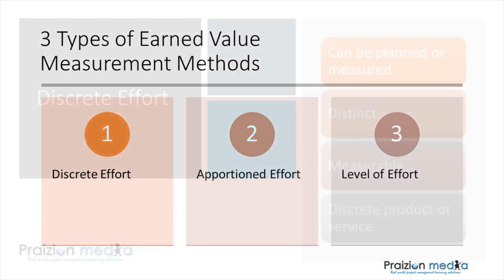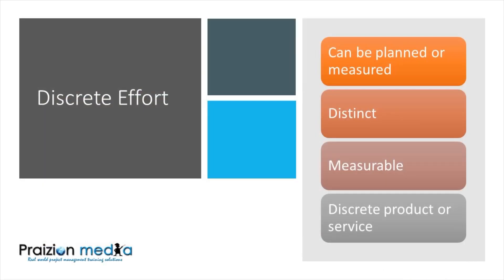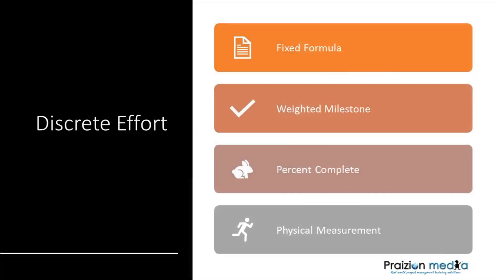Discrete effort, according to the PMI, is an activity that can be planned and measured and yields a specific output. When we talk about discrete effort, it's directly related to specific end products or services. We're talking about distinct measurable points and discrete outputs that result from a discrete effort being applied to the task at hand. Under discrete effort, there are four principle measurement methods available.